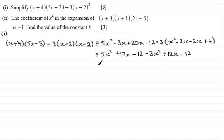OK, let's group this up one more time now, and we've got 5x squared minus 3x squared, which is 2x squared. And then 17x plus another 12x, that's going to be plus 29x. And finally, for the constants, minus 12 minus another 12, that's minus 24.